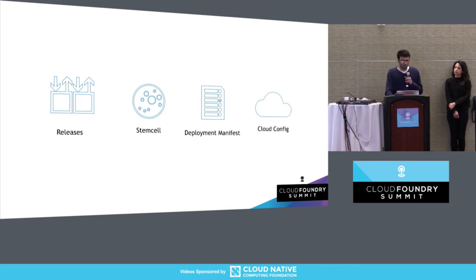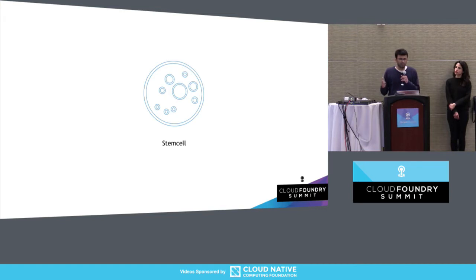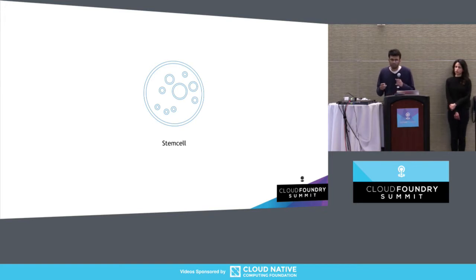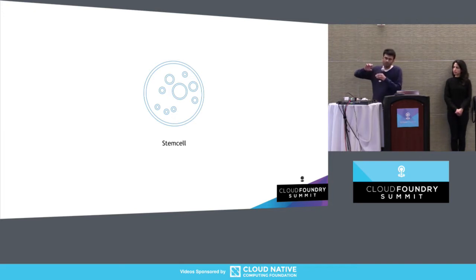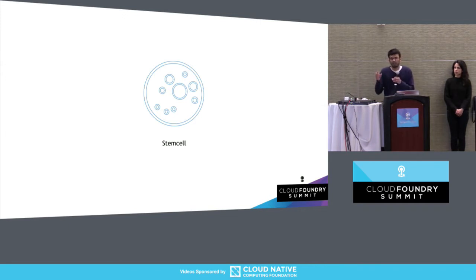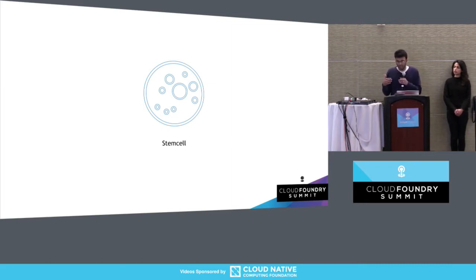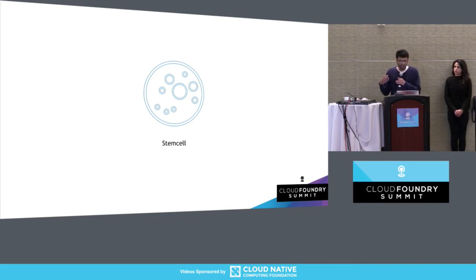The next artifact needed to deploy with BOSH is the stemcell. A stemcell is a bare minimum operating system image normally produced by the BOSH team, with some IaaS-specific wrapping — for vSphere, that's a VMDK image; for AWS, it's an AMI. It allows clear separation of the operating system layer from the actual software you want to deploy. One interesting contract it provides is that the files on the image are the same across IaaS, so the BOSH team ensures you get the same OS files independent of which IaaS or image you're running on. This allows release authors to ensure their code will be compiled and run the same way across IaaS.